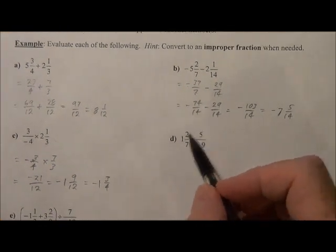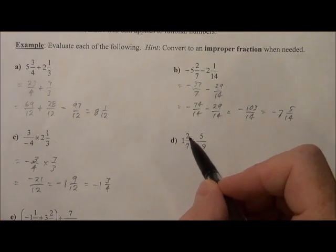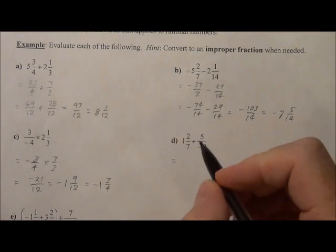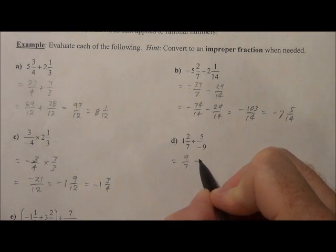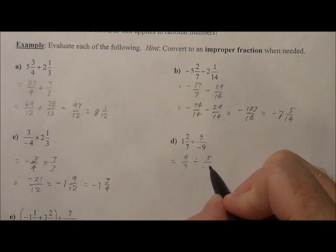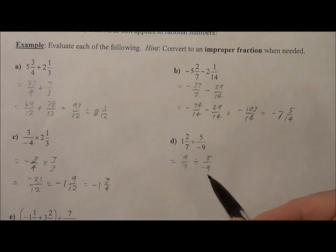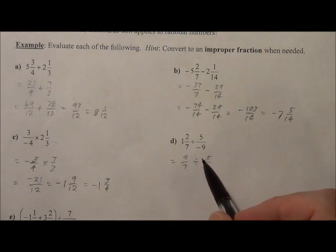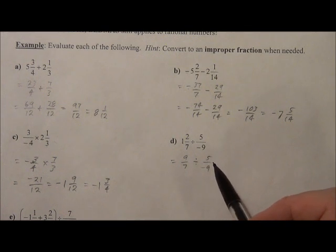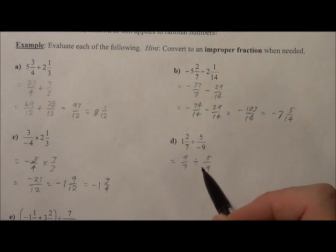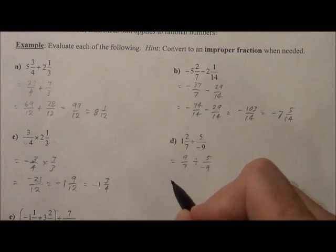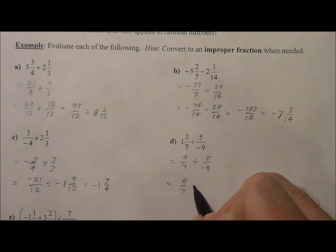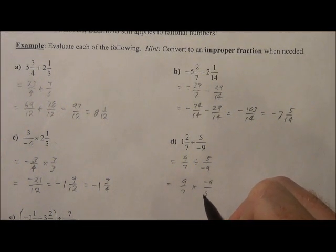On to D. We're going to do some division. Change the mixed number to an improper fraction. So 1 times 7 plus 2 is 9 over 7, divided by 5 over negative 9. Remember when you're dividing, you capsize and multiply, or you can say you multiply by the reciprocals. So 9 over 7 times negative 9 over 5.